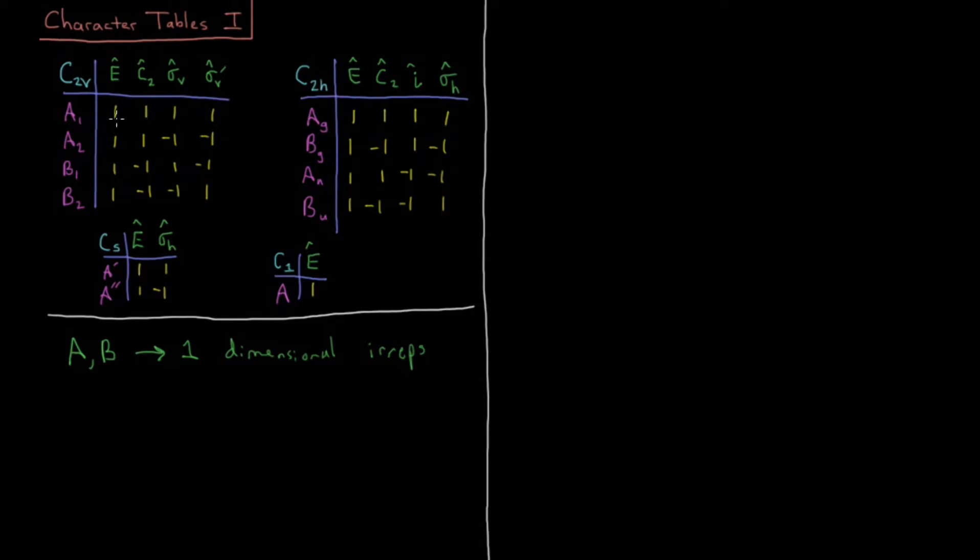Later on, we'll see two-dimensional or three-dimensional irreps. They'll have a 2 or a 3 with respect to the identity element. But a one-dimensional operator with respect to the identity element will always have a 1. And for the rest of the character table, it'll either have a character of 1 or minus 1 with respect to any given symmetry operator.